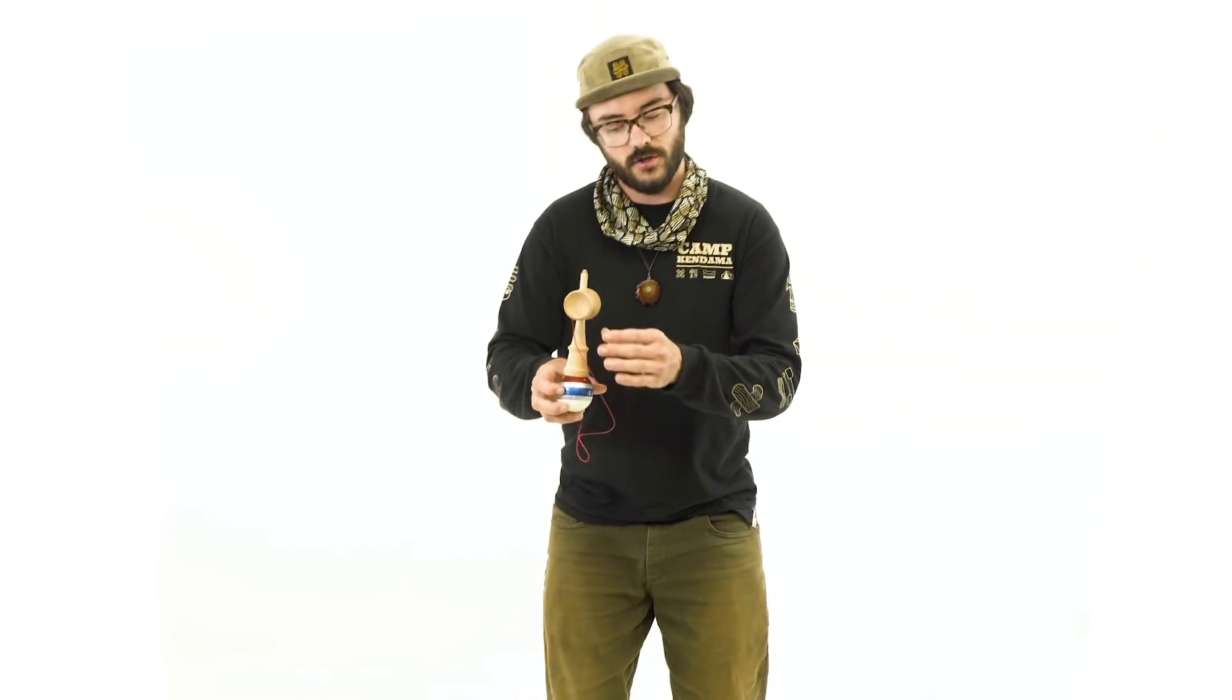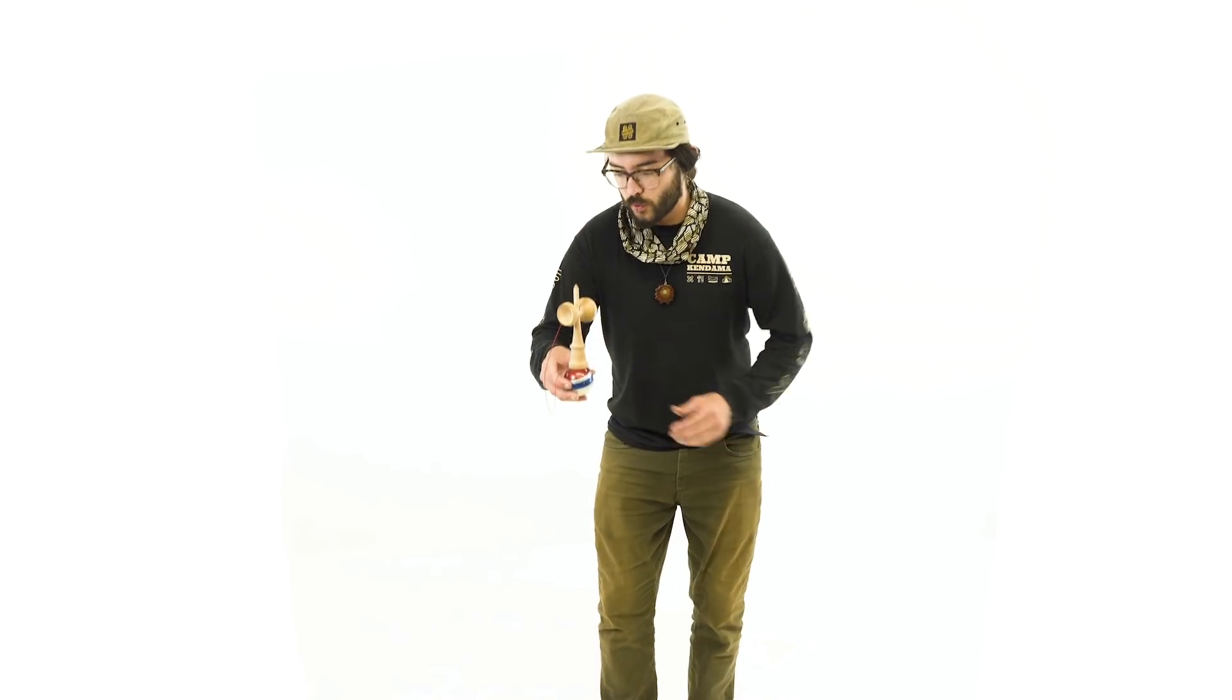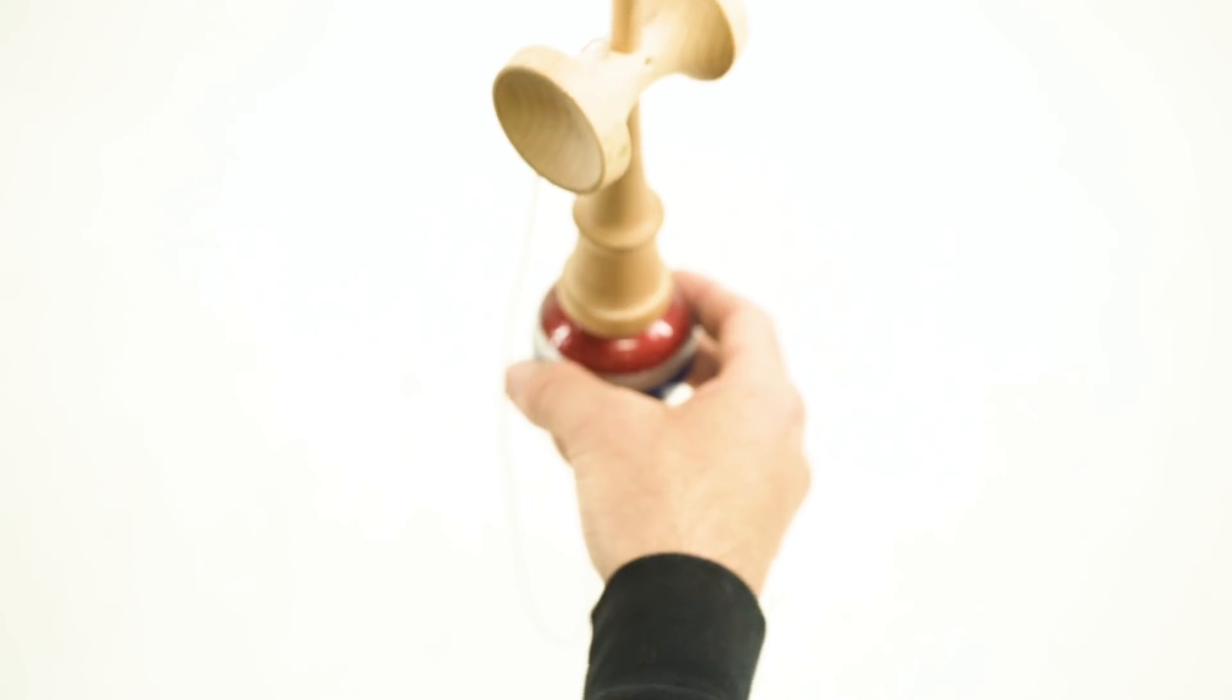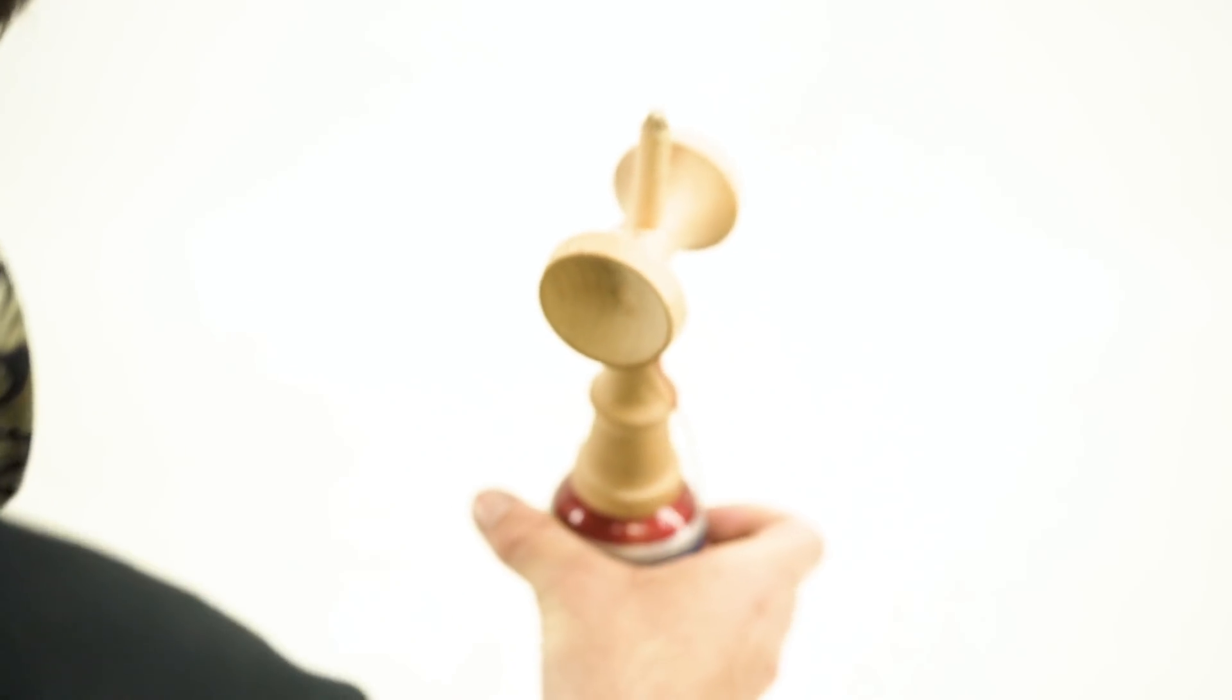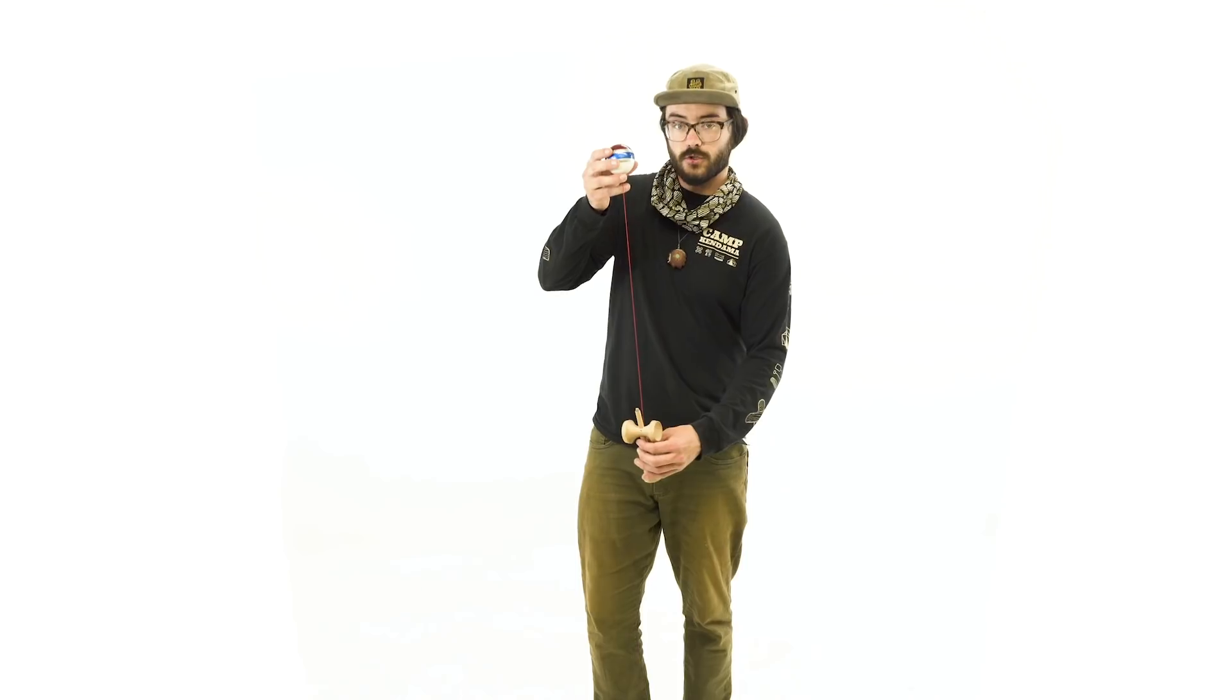Once I start coming up, I'm going to twist my fingers clockwise, and that's going to allow the ken to come nice and controlled up into the air. I'm going to spot that base cup landing to come right back down into lighthouse.